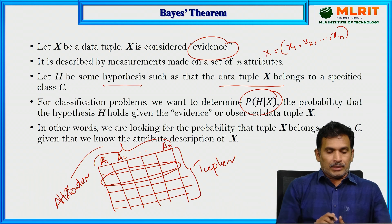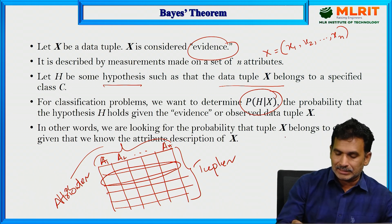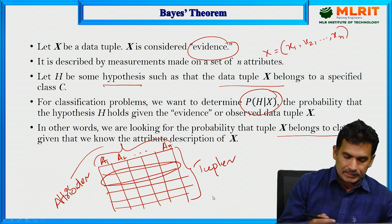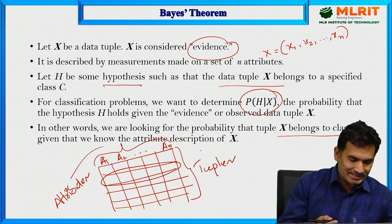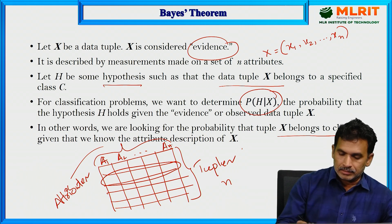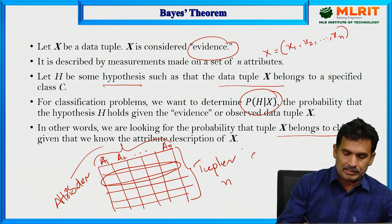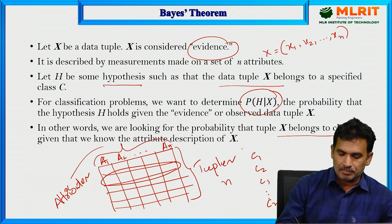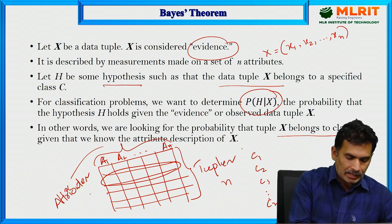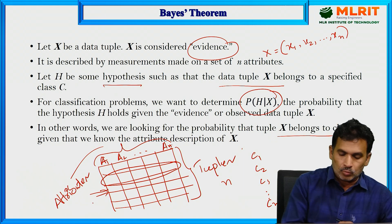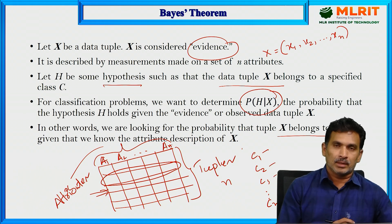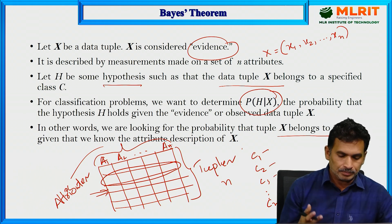In other words, we are looking for the probability that tuple X belongs to class C. Suppose a dataset has N number of tuples and M number of classes — C1, C2, C3, ..., C_M. Then for any given tuple, we need to find out the probability that its class label is C1, C2, C4, and so on up to C_M. Those are the probabilities we are looking for here.